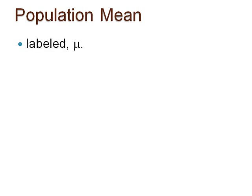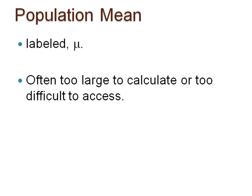It is often the case that the population is too large or too difficult to access, and it becomes nearly impossible to collect all the data needed to compute the population mean. Can you recall the formula for the population mean? Pause here and try to write it down.